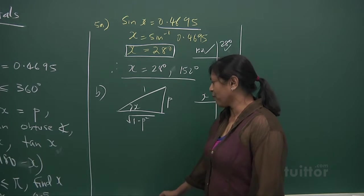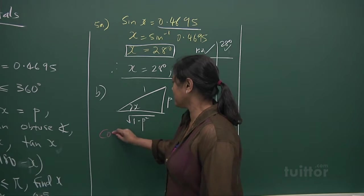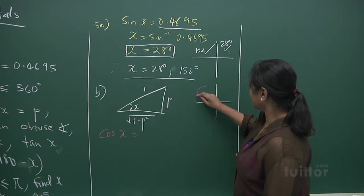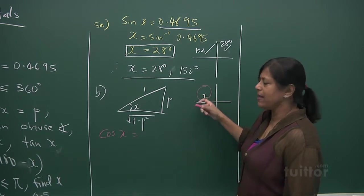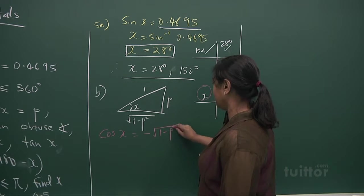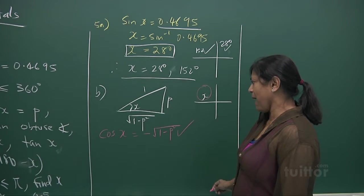From there, they want you to find out what is cos x. So you look at cos x. Adjacent over the hypotenuse. But lying in this quadrant is going to be negative. So it's 1 minus P squared over 1. That's your cos x.